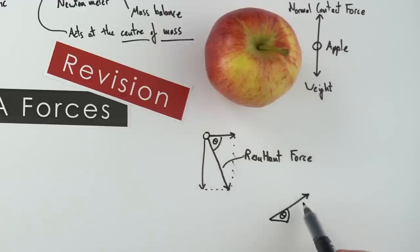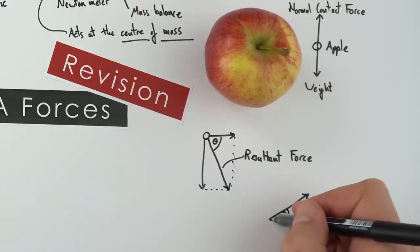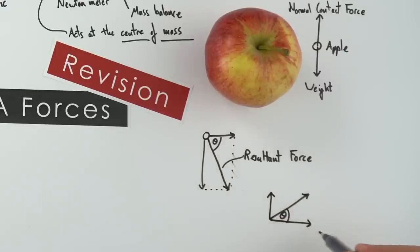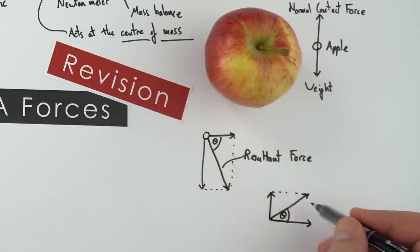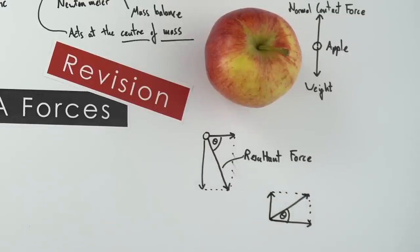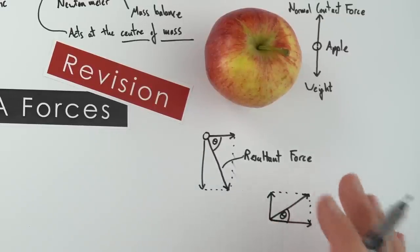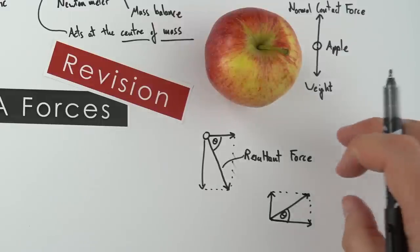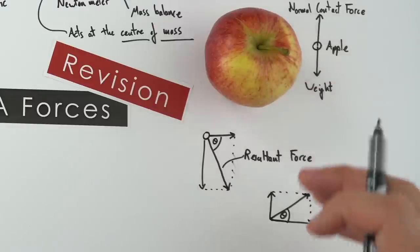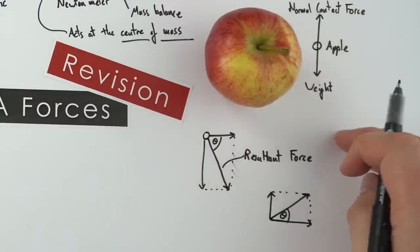Similarly, if there's a force acting at a certain angle theta, we can resolve this force into its vertical and horizontal components. A force acting up and to the right has a certain size acting upwards and a certain size acting to the right. Drawing diagrams is a really useful way of looking at all the forces on an object, finding the resultant force, and finding its size and direction.